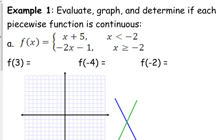So the first part here is where these functions are written. If our x values are less than negative 2, then this function, x plus 5, applies. If your x values are greater than or equal to negative 2, then the function negative 2x minus 1 applies.